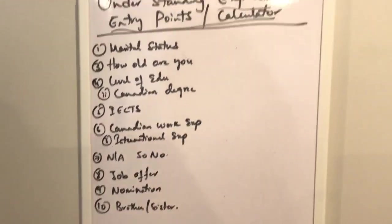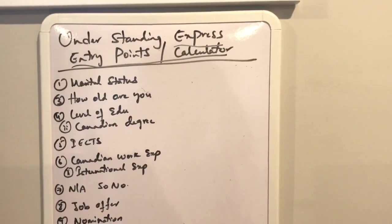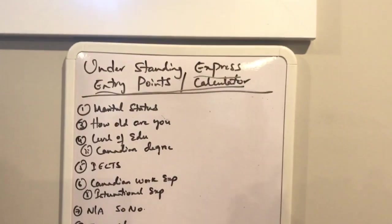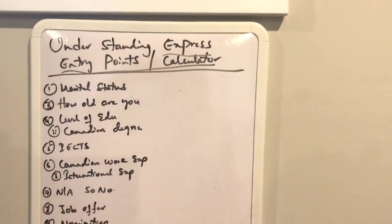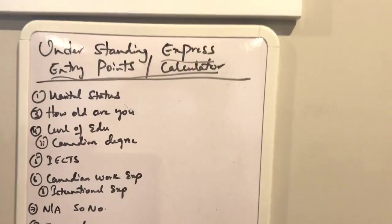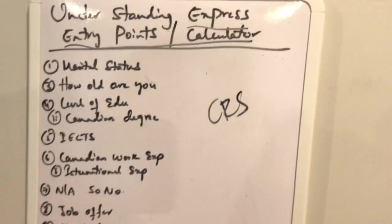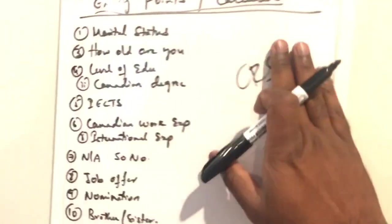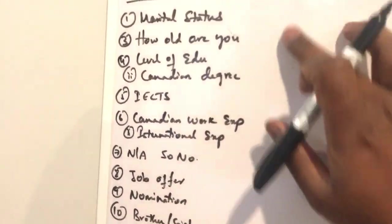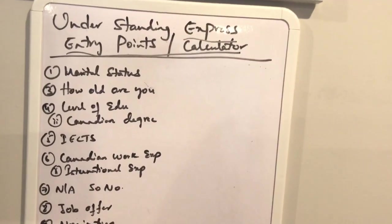Express entry is all about, if you are a single person, you can type in Google Express Entry Points Calculator. There are a couple of links. First there is CRS. Click on this page. You can check that page.